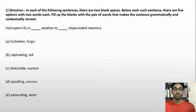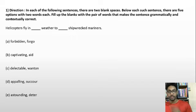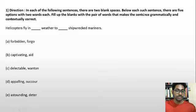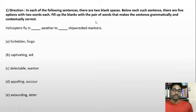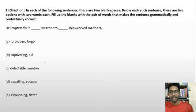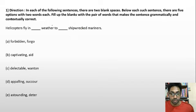If you need 5–10 seconds to understand the direction of the sentence, invest those seconds. Then you can confidently approach the question. So here the instruction is: in each of the following sentences there are two blanks. Below each sentence there are five options with two words each. Fill the blanks so that both blanks are suitably filled and the sentence becomes grammatically and contextually correct.